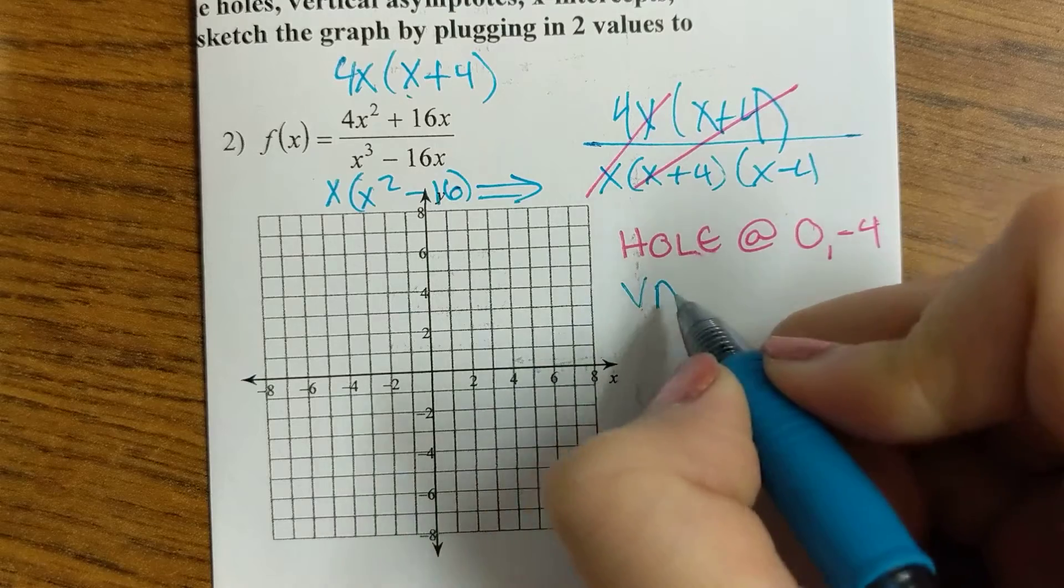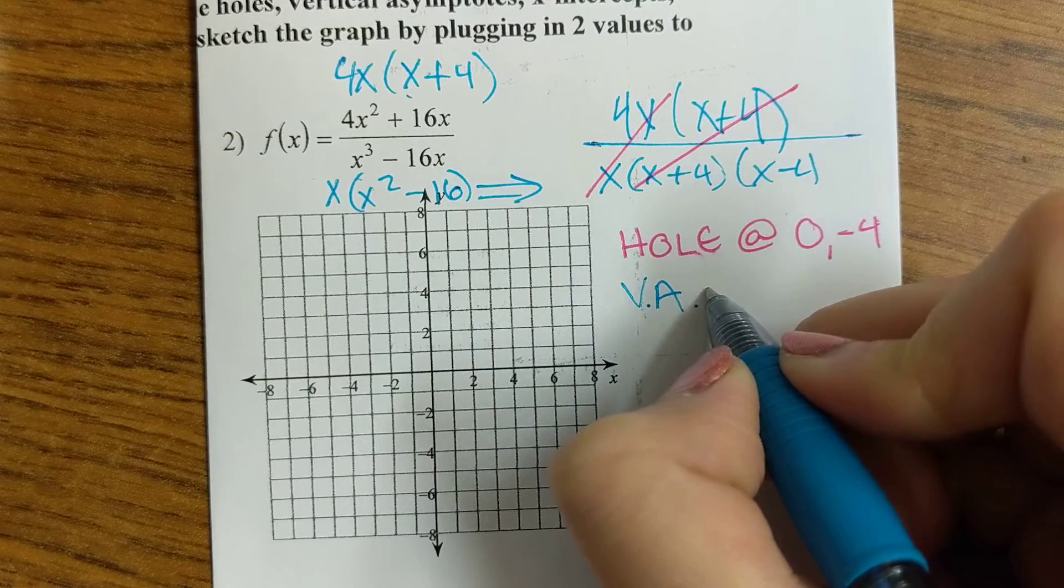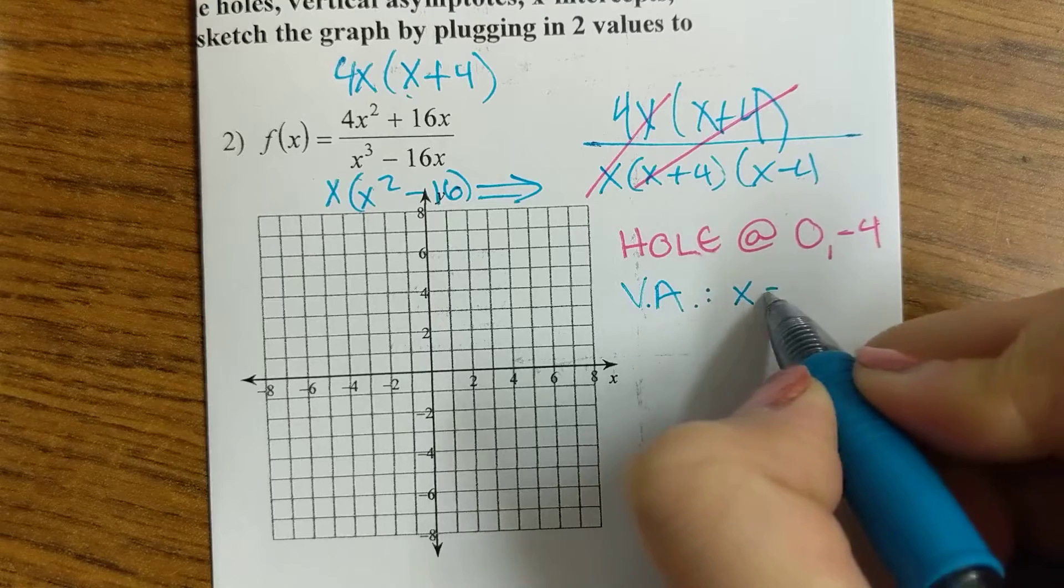Now my vertical asymptote is whatever makes the denominator 0 after I have put in my holes, and that would be x equals 4.